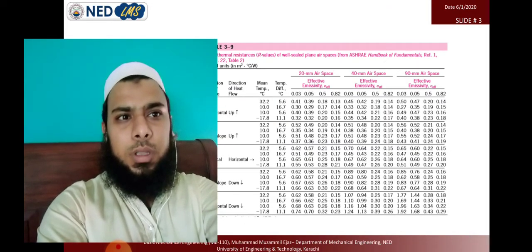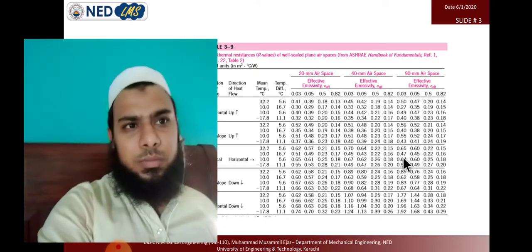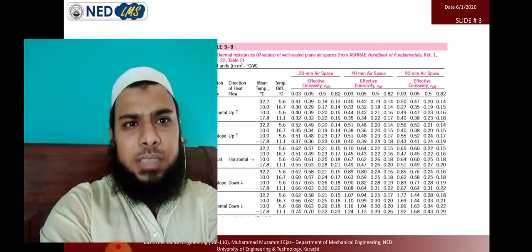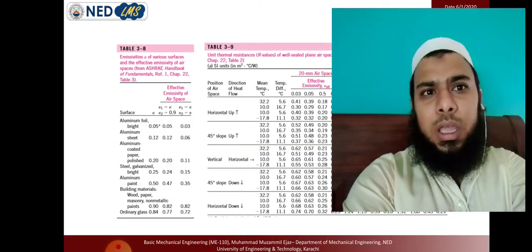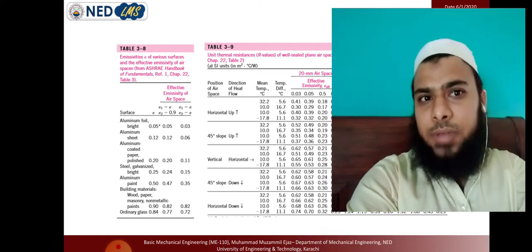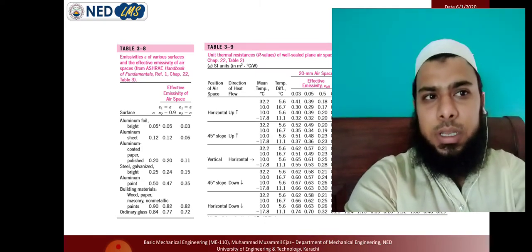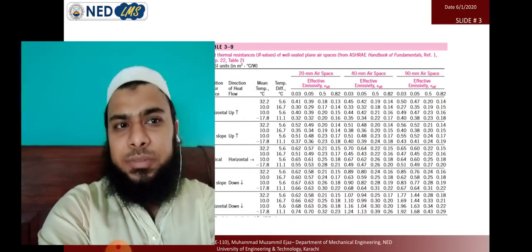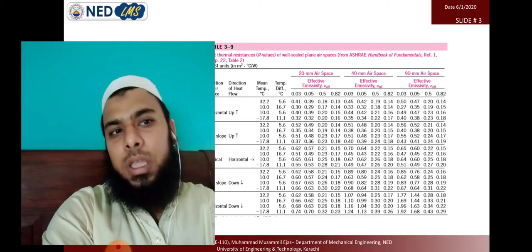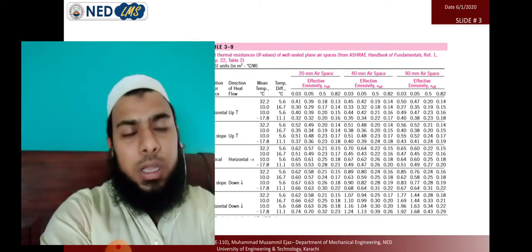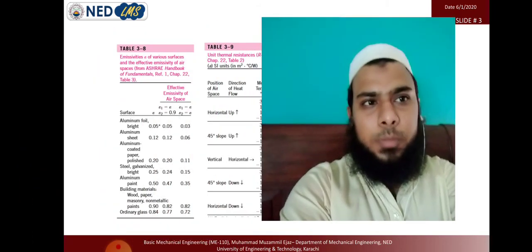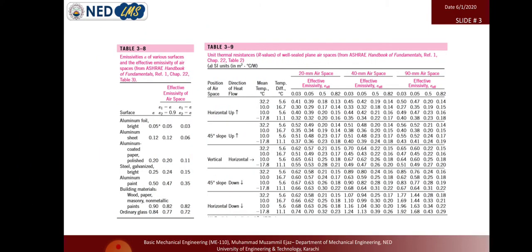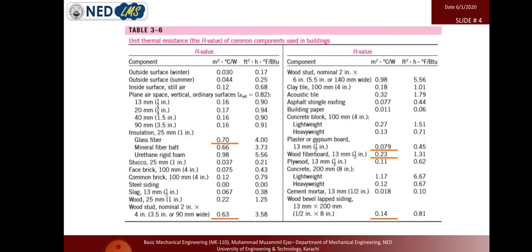These tables also show emissivity values for radiation calculations. From the emissivity value, we can calculate the resistance due to radiation. We also have the U-values of different construction materials that will be used in the upcoming numerical.